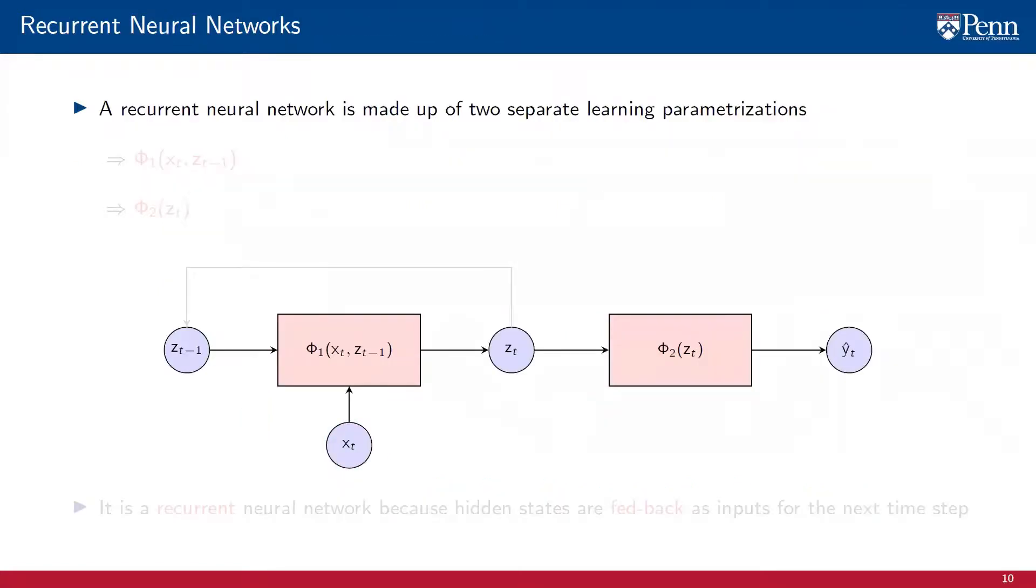In order to extract information from the data sequence without running into dimensionality issues, a recurrent neural network makes use of two separate learning parametrizations. A function phi1 that maps the observed state x of t and the hidden state zt-1 into a hidden state update zt.